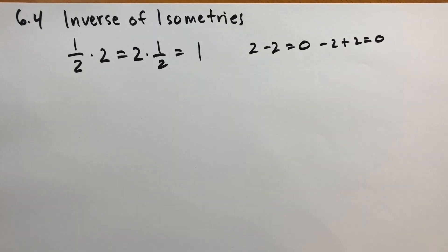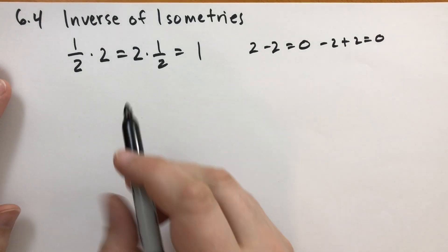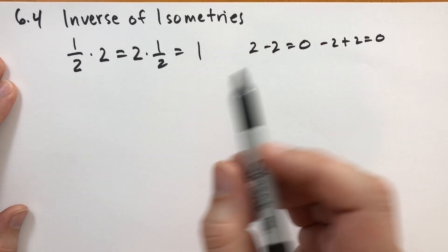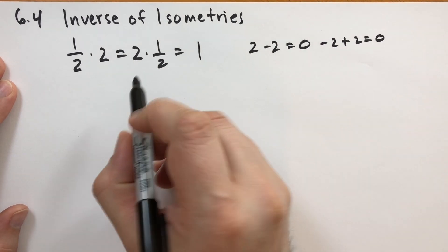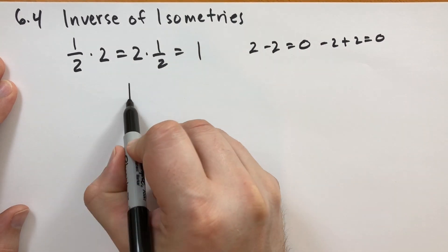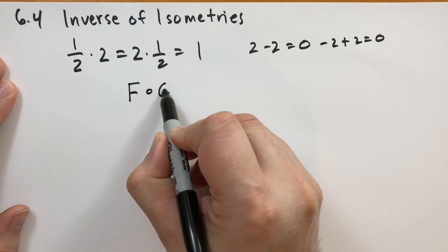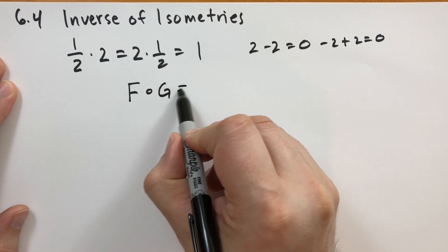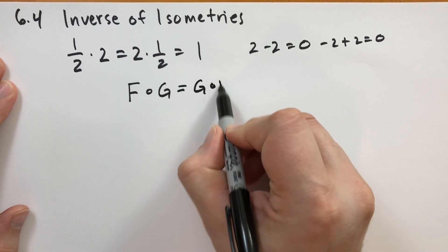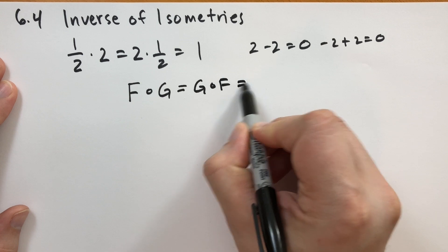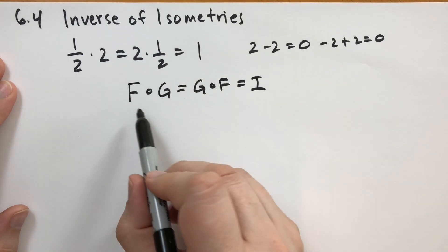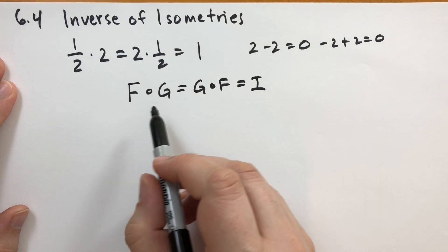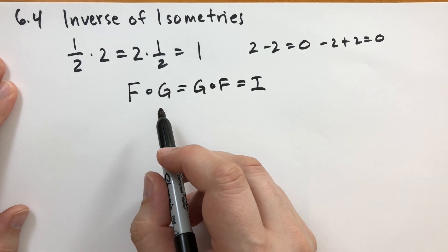So just like that, with isometries there is also — I can't prove it yet and you'll prove it later on, it's somewhat easy to prove — but suppose you had two isometries that multiply together and give you the identity either way. We would say G is the inverse of F.